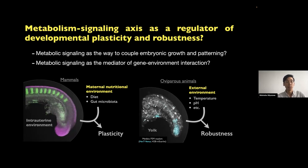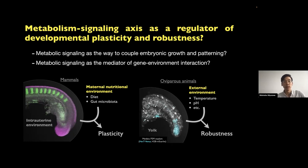I also think the link between metabolism and signaling is more general, so I want to explore its function beyond the mouse PSM — in particular in the context of gene-environment interactions. In mammals, maternal nutrition has a significant impact on epigenetic phenotype. In external-development embryos like fish, development happens robustly despite unstable environmental parameters. My future goal is to explore the metabolism-signaling axis in the context of plasticity and robustness using mice and fish models, proposing it as a mediator of gene-environment interaction.